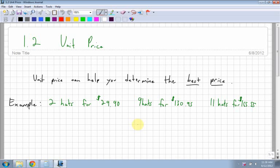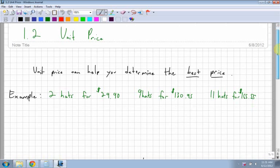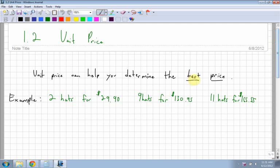Alright, section 1.2 is unit price. We looked last day at how to find a unit ratio, so now we're going to look at how to find unit price. Very similar. Unit price can help you determine the best price.